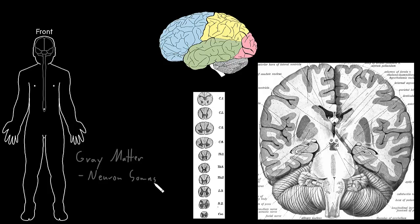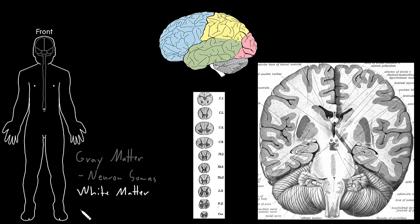Most of the neuron somas in the central nervous system are found in the gray matter. And then there are other areas called white matter. In the white matter of the central nervous system is most of the myelinated axons — axons that are wrapped in myelin.